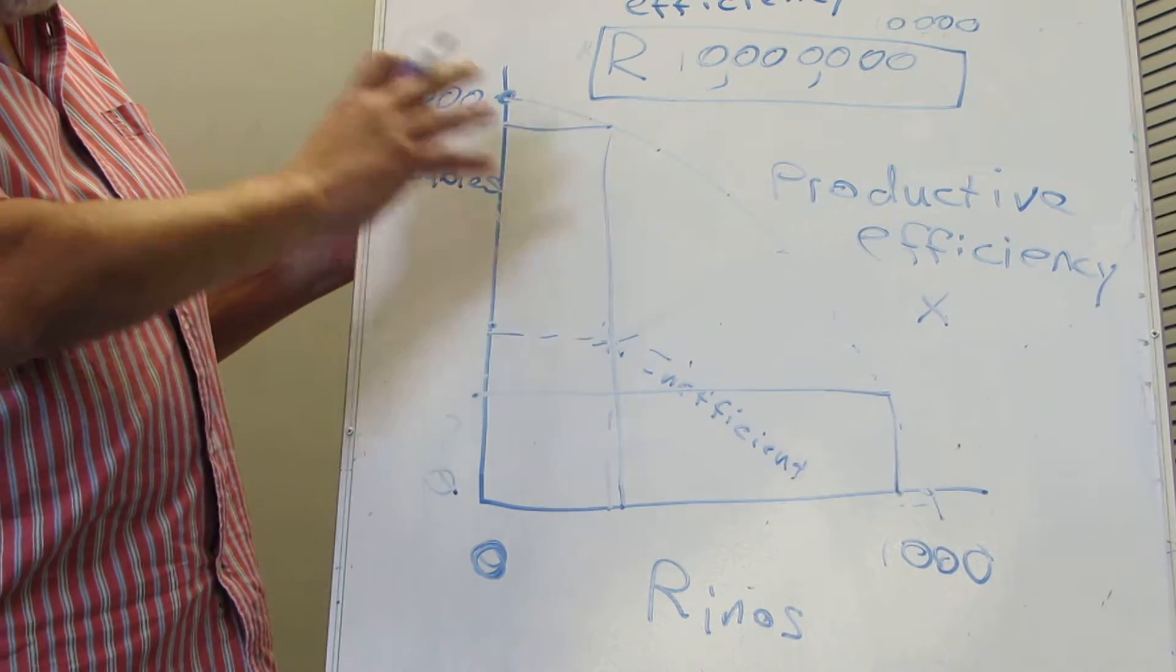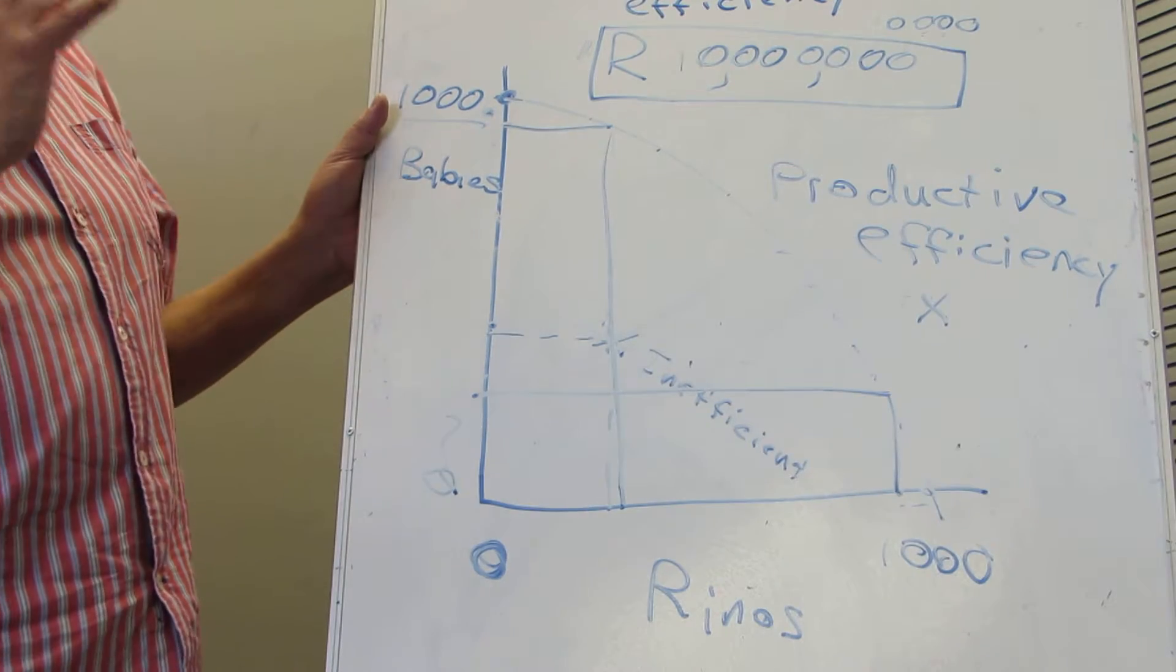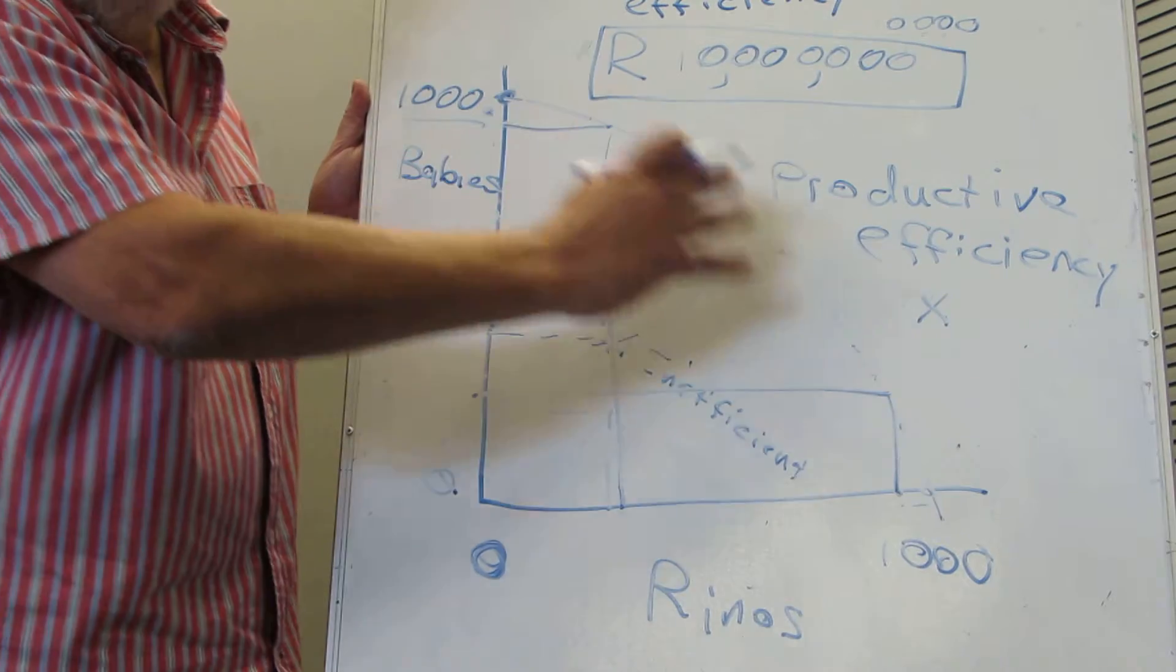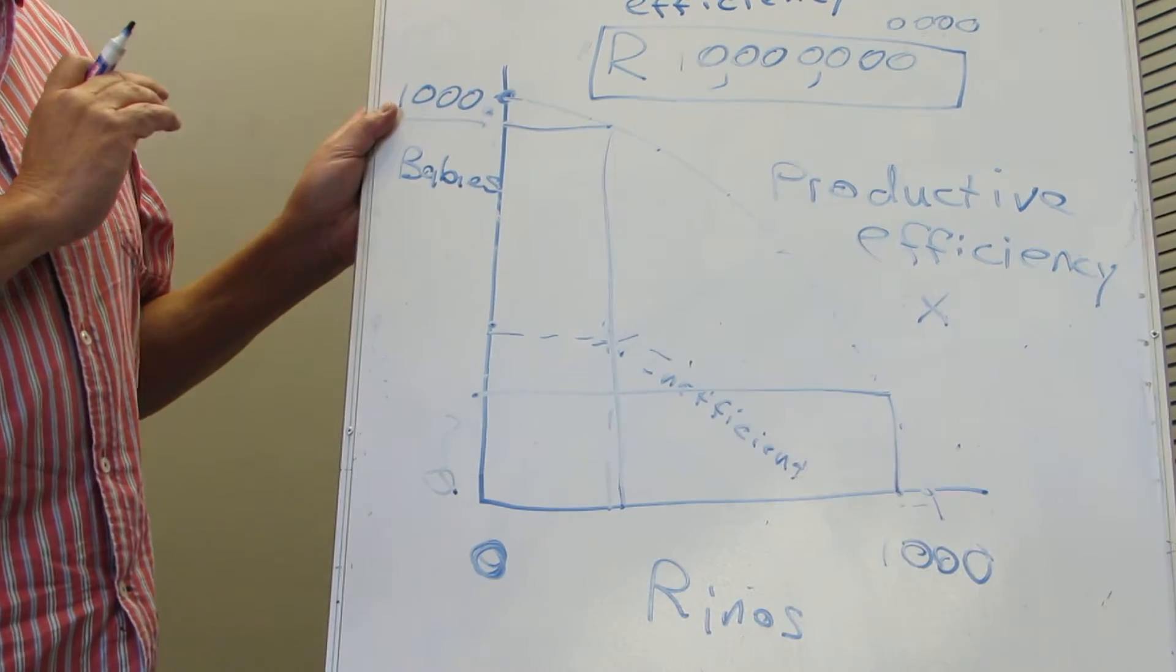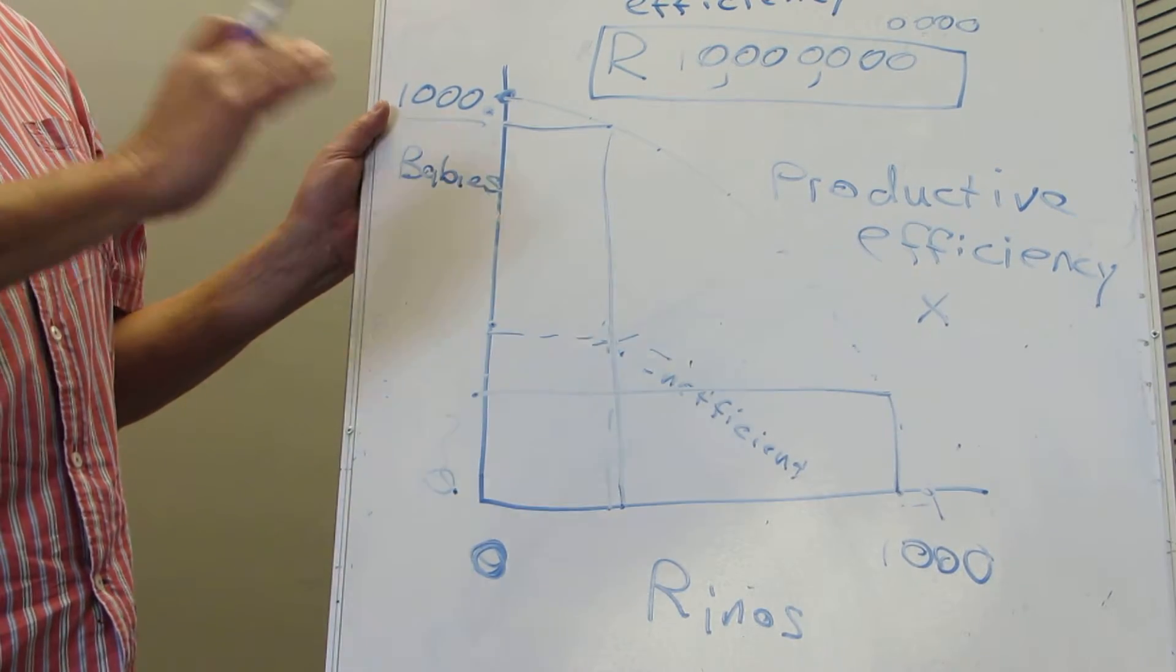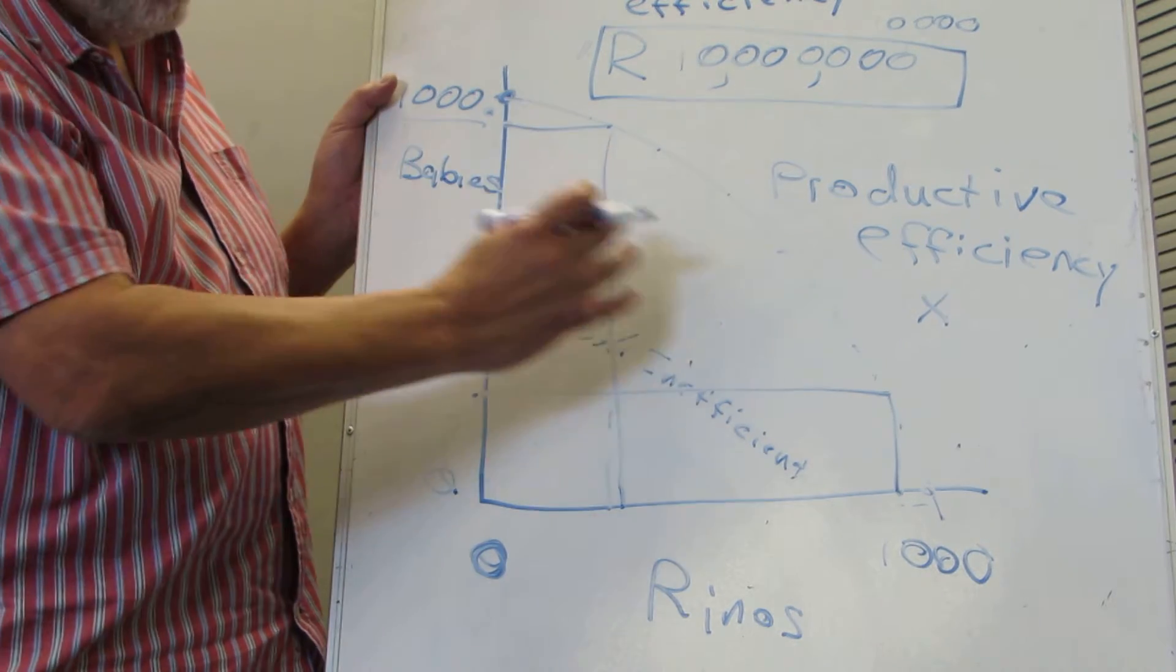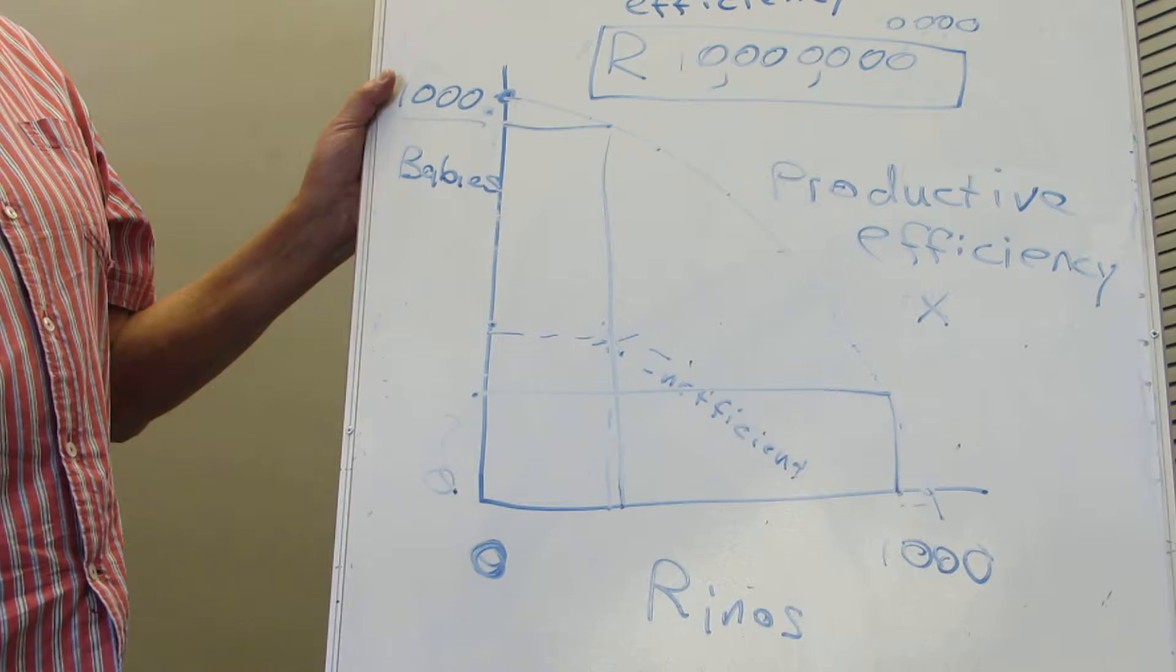You can see that the opportunity cost, the relationship between the two, differ depending on where one is on one's curve. So you can see that somewhere there will be, let's call it an optimum point.